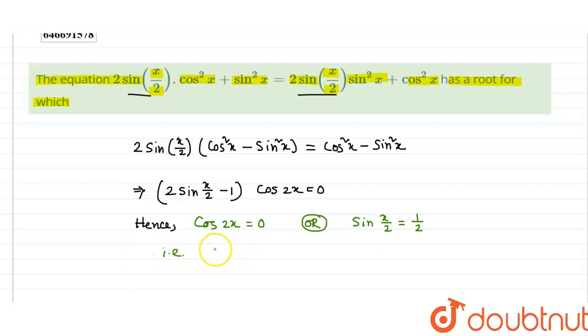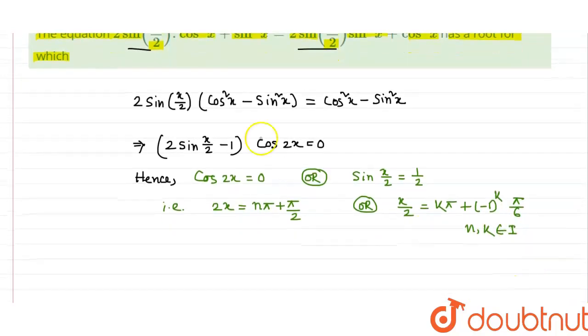So 2x equals nπ plus π/2, or x/2 equals kπ plus (-1)^k times π/6, where n and k belong to integers.